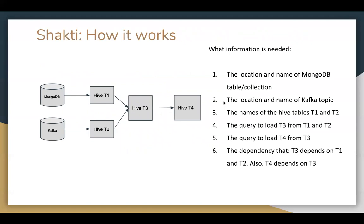So how does it work? Let us take a very simple example of ETL. We have two sources, MongoDB and Kafka. Two different Hive tables are loaded from there. A third Hive table T3 is populated by joining tables T1 and T2. And then there is a final Hive table T4 which reads from Hive table T3. The information we need includes the location and name of the MongoDB table, the location and name of the Kafka topic, the names of the Hive tables involved, the queries needed to load from one Hive table to the other, as well as the dependencies — T3 depends on T1 and T2, and T4 depends on T3.